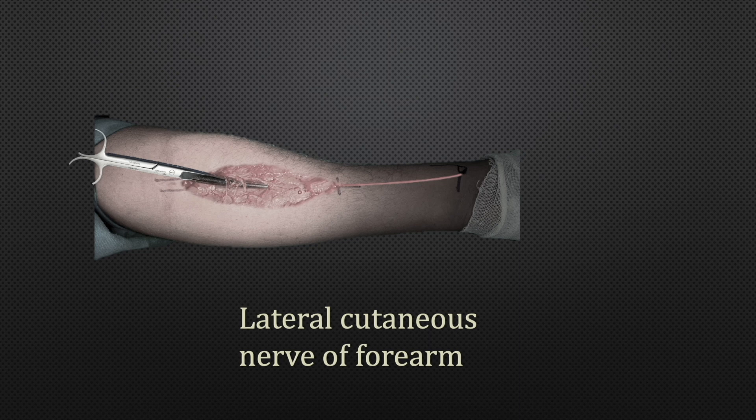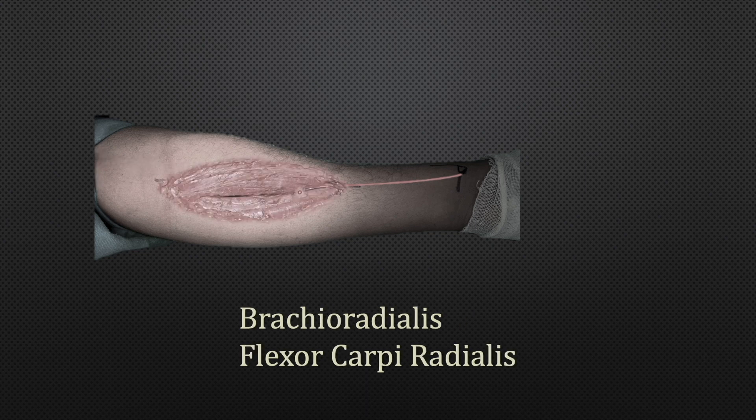Once you start your incision, the first thing you need to do is prevent any injury to subcutaneous nerves. The lateral cutaneous nerve of the forearm lies in this area just over the brachioradialis. Be careful whenever going through subcutaneous tissue — protect the nerve endings. If they come into your exposure plane, you can pull and transect them to avoid any painful neuroma formation, but whenever possible, try to preserve them.